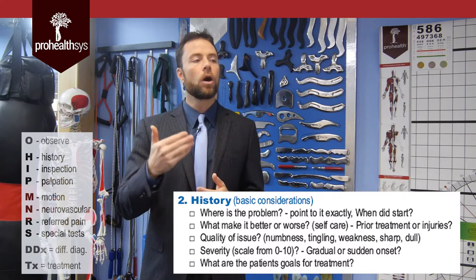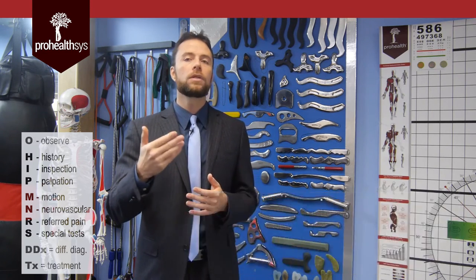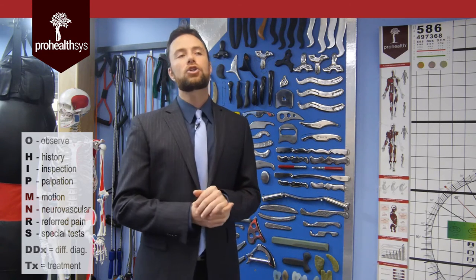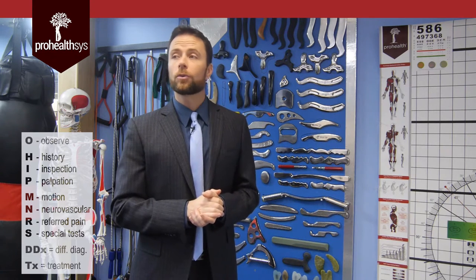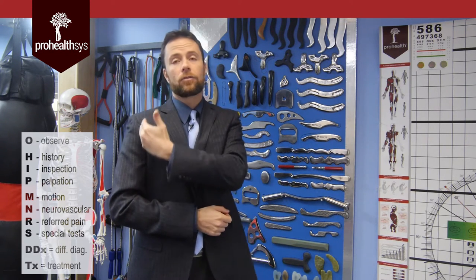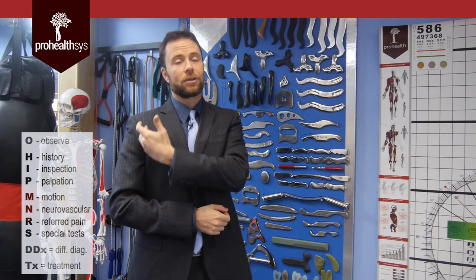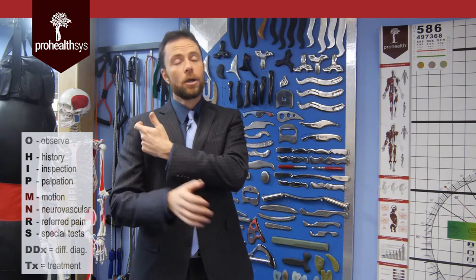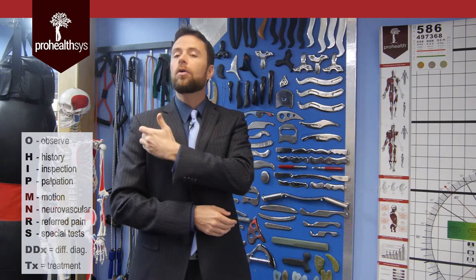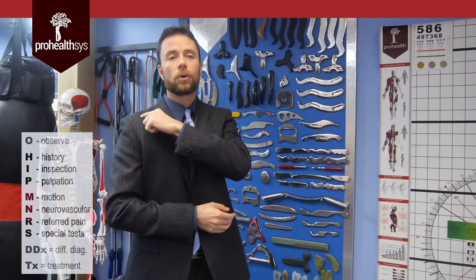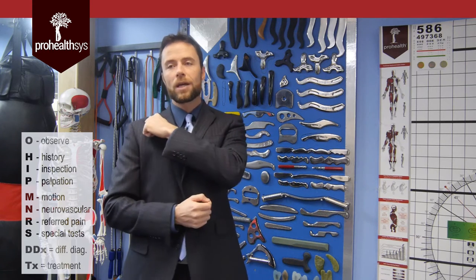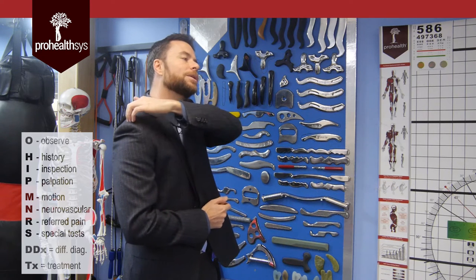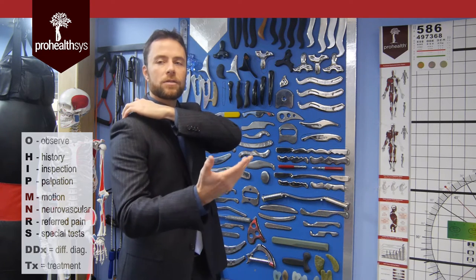You always want to ask a patient to point to the areas that are damaged. For example, 'my shoulder hurts' — and they go like this along the front. What are they telling you? The anatomy below their hand, probably that their biceps brachii is damaged. Or they point right at that little bony bump — probably the AC joint is damaged. Or they reach back behind their shoulder — probably the supraspinatus is damaged.